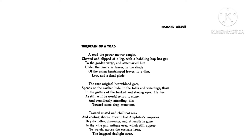The injured toad is removed from the side where it was hurt and goes to the garden verge — to a place under the cinerea leaves, in the shade of the ash and heart-shaped leaves, in a dim low place, in a final glade.